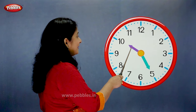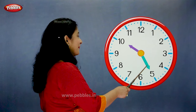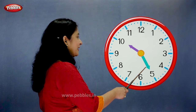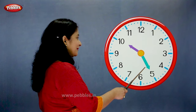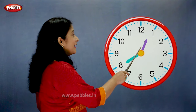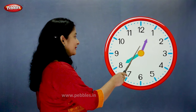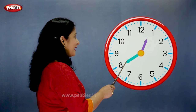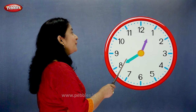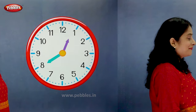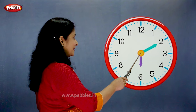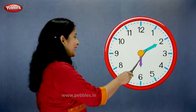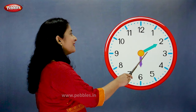The hour hand is on 10. The minute hand is on 5. So we say the time is 25 past 10. The hour hand is moving towards 1. The minute hand is on 8. So we say the time is 20 to 1. The hour hand is on 6. The minute hand is on 2. So we say the time is 10 past 6.